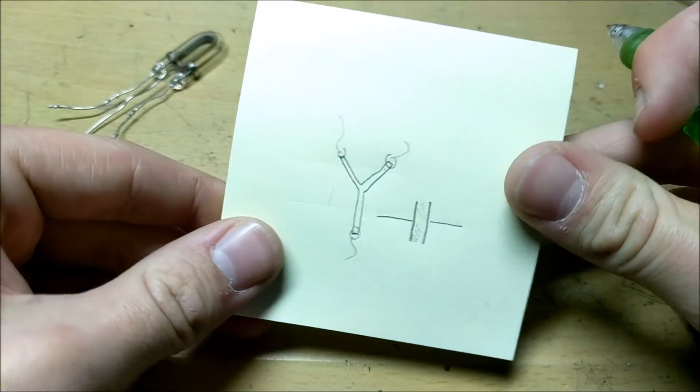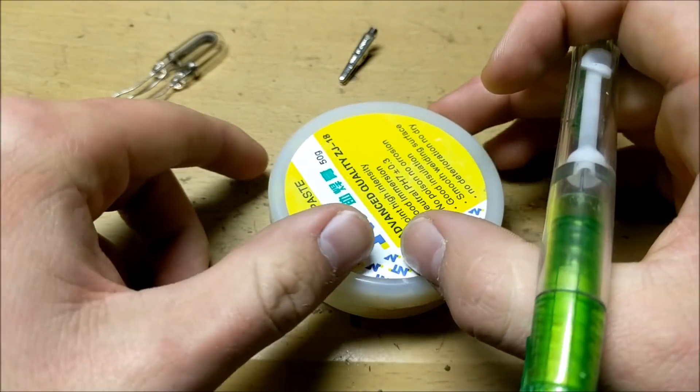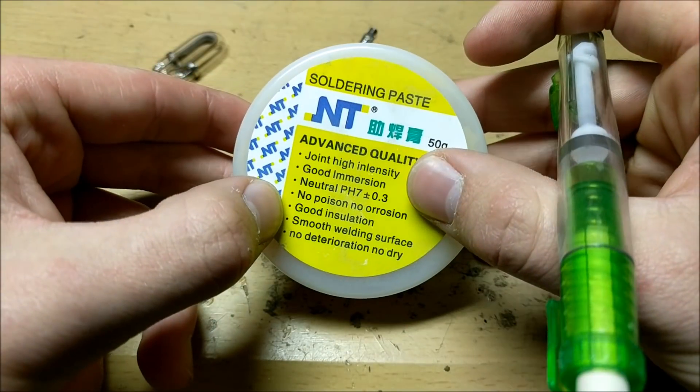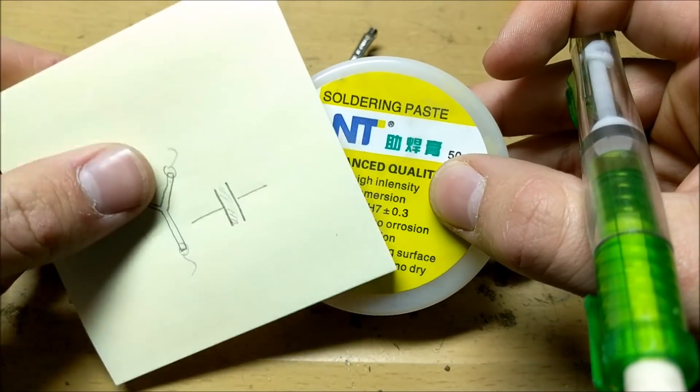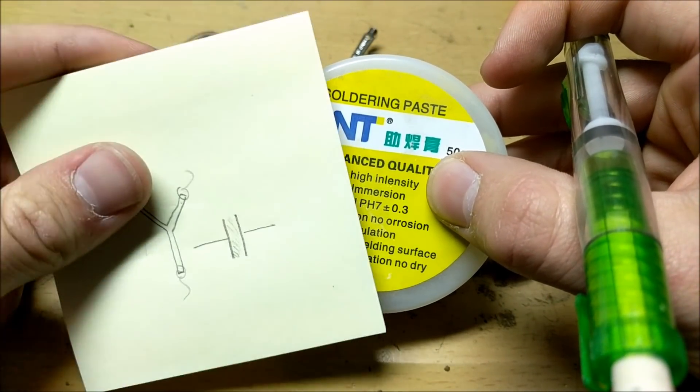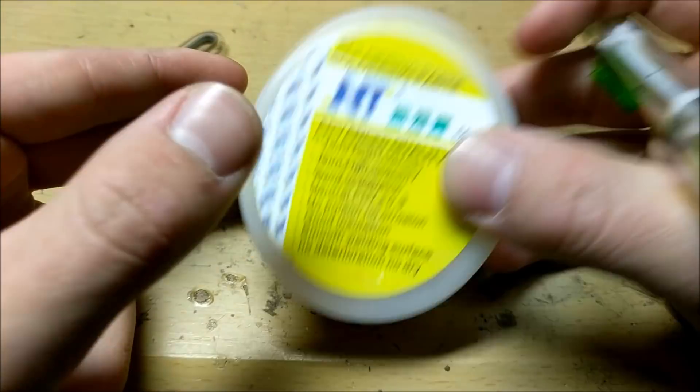Well anyway, we're going to try and make a capacitor out of soldering flux. So this isn't a flux capacitor like you think, but it technically is a flux capacitor because it's a real capacitor made out of real flux.